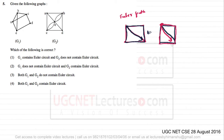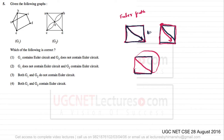Now if you have a graph like this, for this graph the Euler cycle does exist. You can visit the edges like this and then come back to the starting vertex after visiting all the edges. So you can see you are coming back to the starting vertex — therefore an Euler cycle or Euler circuit does exist here.